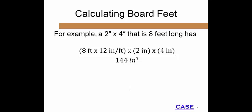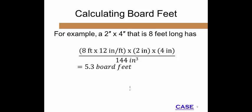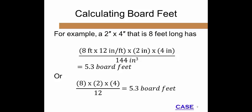To calculate board feet for a 2x4 board 8 feet in length, complete the following calculations. Convert feet to inches by multiplying 8 by 12. Calculate the cubic inches by multiplying 96, 2, and 4, then divide by 144. You can also complete the calculation without converting to inches: if you use cubic feet instead of cubic inches, multiply 8, 2, and 4, then divide by 12. Either way, the answer is 5.3 board feet.